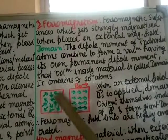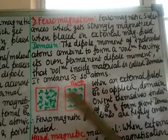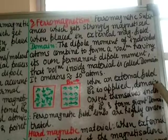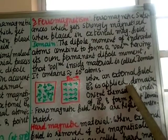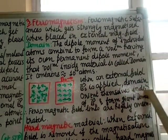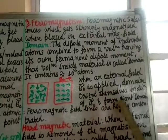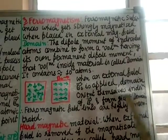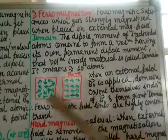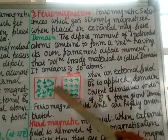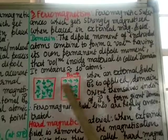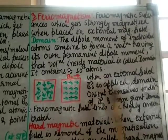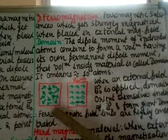In this figure, the arrows are showing the dipole domains and the magnetic moment. When an external magnetic field B-naught is applied, the domains orient themselves in the direction of B and form a giant domain. Here you can see they are randomly oriented, but when you apply an external magnetic field they will align in the direction of the magnetic field.